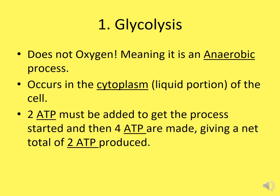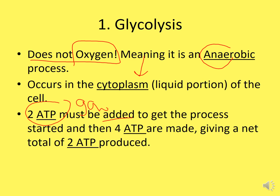Glycolysis is the first step. It does not need oxygen, meaning it is anaerobic. It takes place in the cytoplasm — the jelly-like substance that holds the cell together. Two ATP must be added to get the process started, like gas to get a car cranked. Once it starts, four ATP are made, giving us a net profit of two ATP produced.